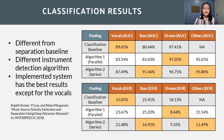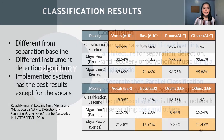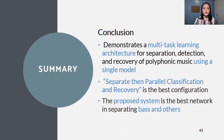To summarize, this work demonstrates a multi-task learning architecture for separation, detection, and recovery of polyphonic music using a single model. Experiments show that the separate then parallel classification and recovery, or the parallel network, is the best configuration based on the overall performance of the system. The implemented system is also the best network in separating bass and other sources.